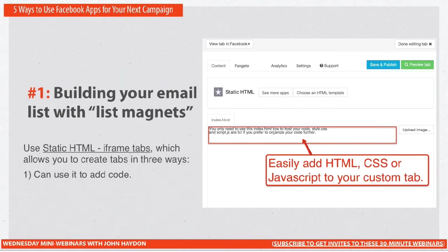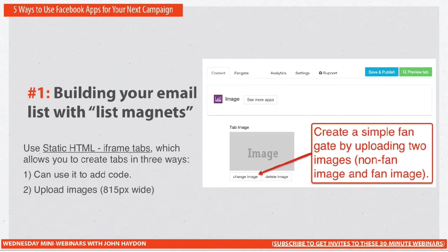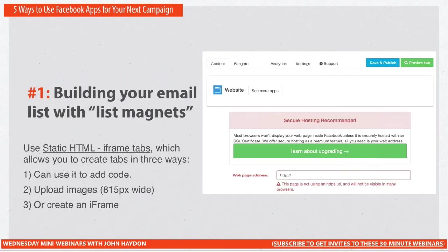You can simply add code to it. This is important because you will create a campaign that's going to acquire an email — here's an e-book we're going to offer you as a download, put your name and email into this form. That form you embed into this custom tab as HTML. You can also upload images, and this feature has a LikeGate feature, which is really great. You can use iframes. The list magnet idea is really where you're using an application like Static HTML, getting someone with HTML or coding experience — maybe a designer — to put together the message and assemble it fairly quickly with the Static HTML iframe tabs app.